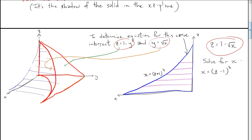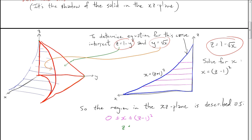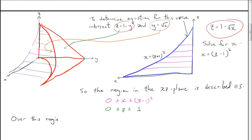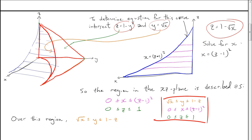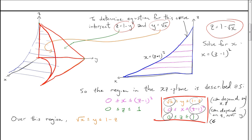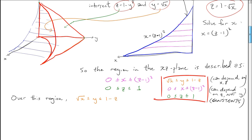So x goes between 0 and (z minus 1) squared, and z goes between 0 and 1. Over this region in the xz plane, y goes between root x and 1 minus z. Our new description: y between root x and 1 minus z, x between 0 and (z minus 1) squared, z between 0 and 1. Check: bounds for y depend on x and z — yes. Bounds for x depend only on z — yes. Bounds for z are constants — yes. The description makes sense.